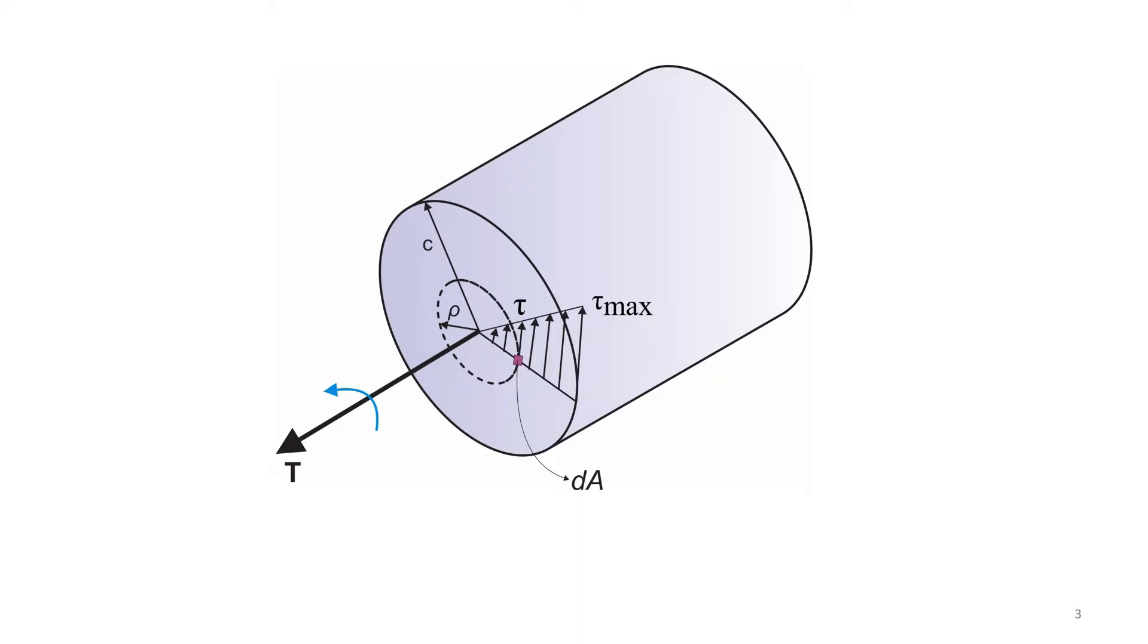Because of symmetry, planes normal to all the axes of the bar remain plain during deformation, and the shearing stress tau varies linearly with rho, the radius distance from the axis of the shaft.